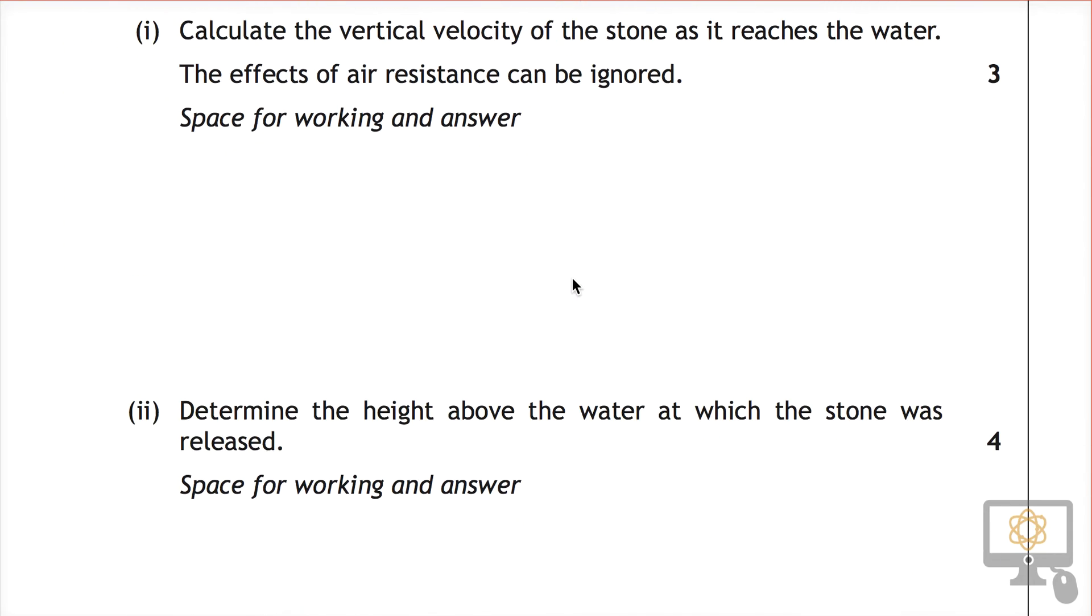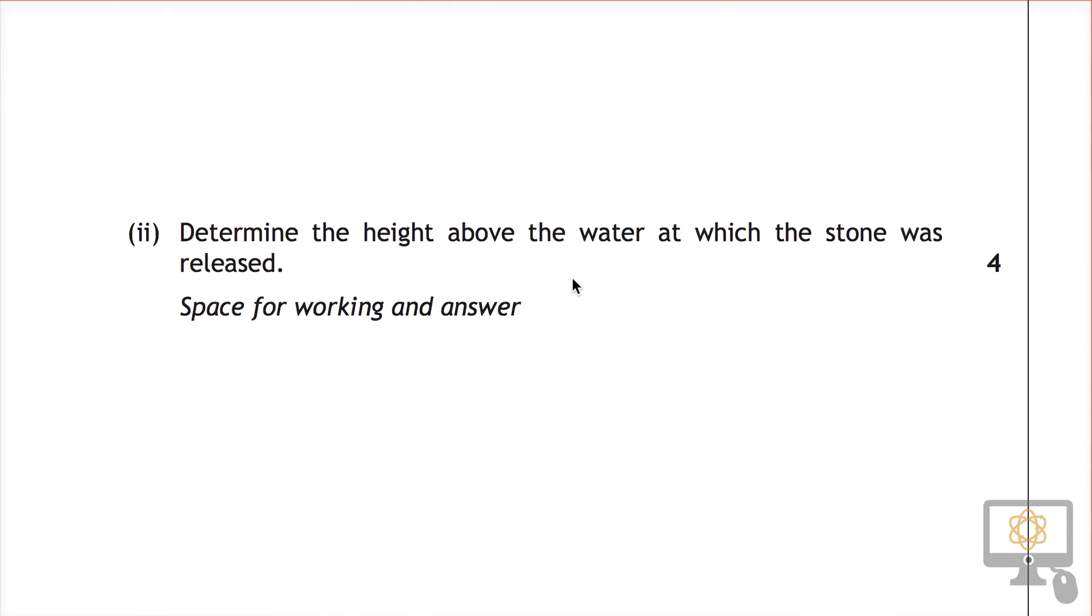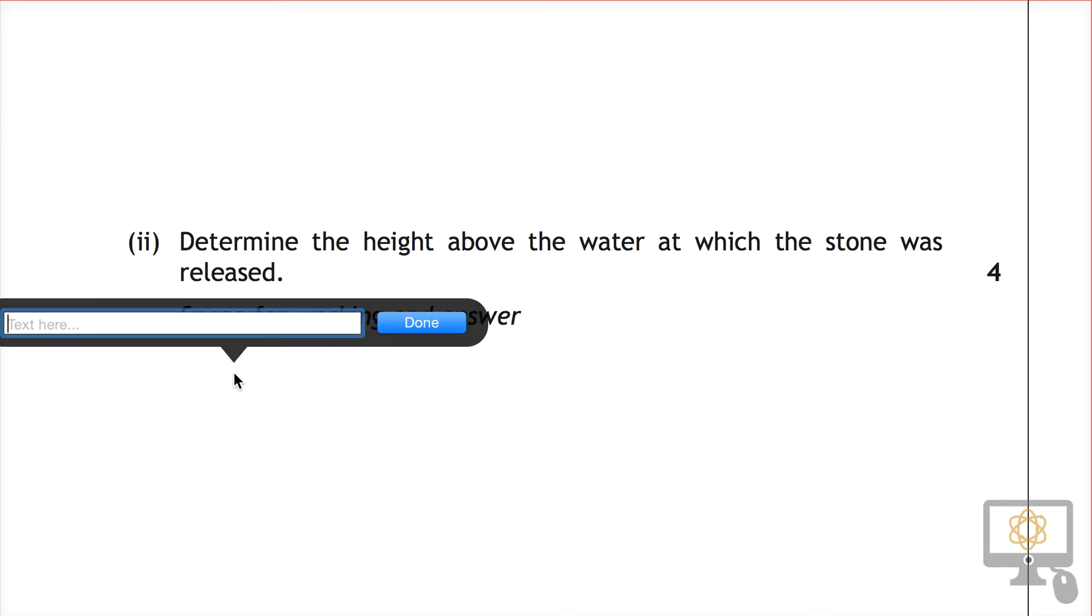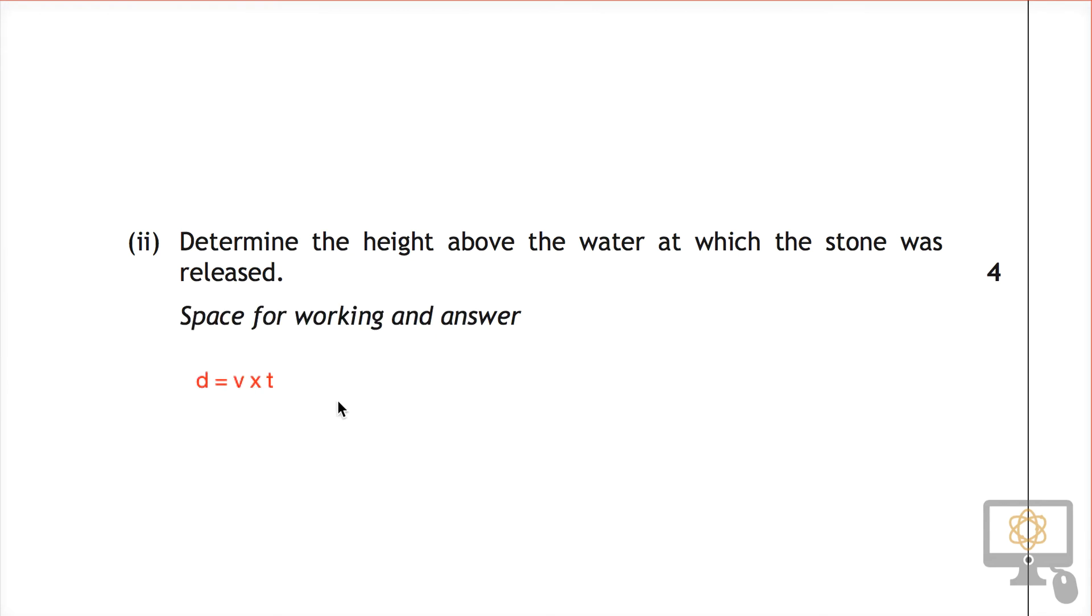To answer this question, the height at which it's released, typically you could use distance equals speed times time. If we start out with that, we could write in our formula, which is distance is equal to speed multiplied by time. Now, the distance is the vertical distance, the speed is the vertical speed, but the vertical speed is not constant.